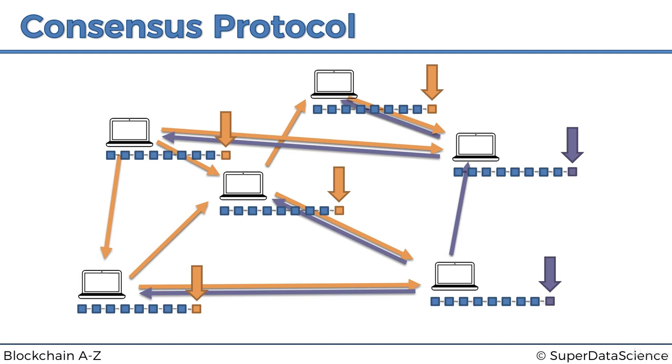So what happens? What's the consensus protocol in blockchains? With the generals, their consensus protocol was to look at the majority of the messages and then do that. Take the majority, not the average.